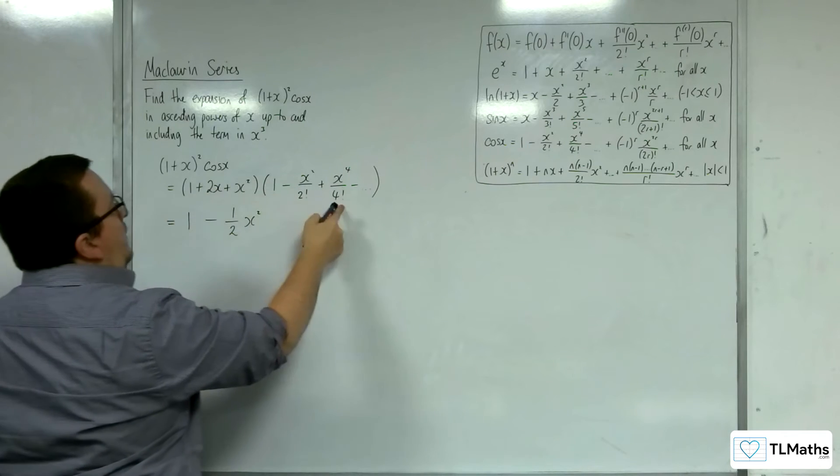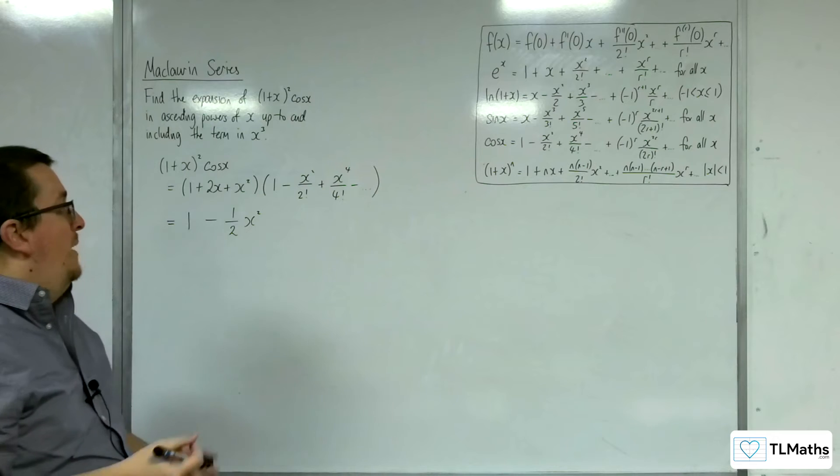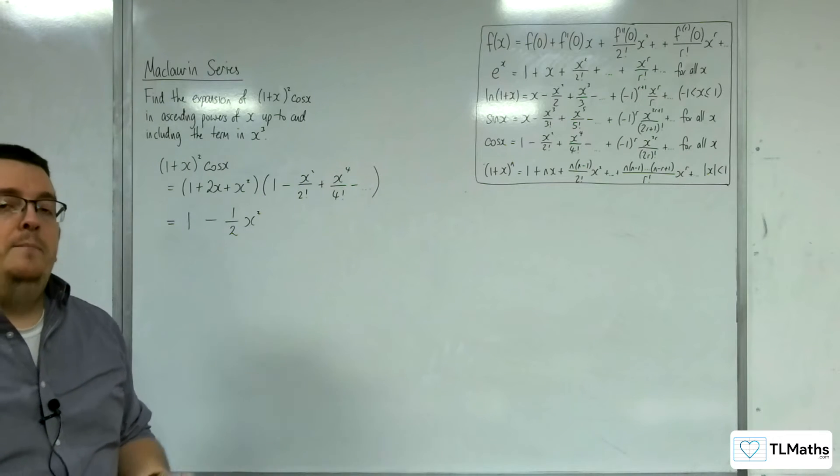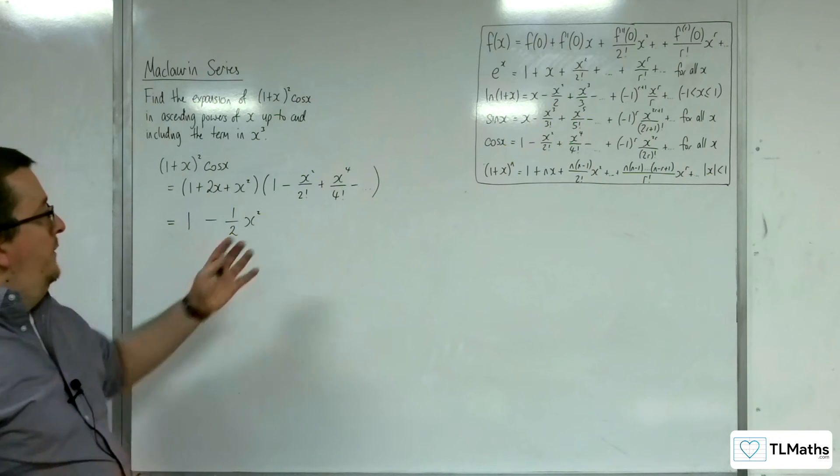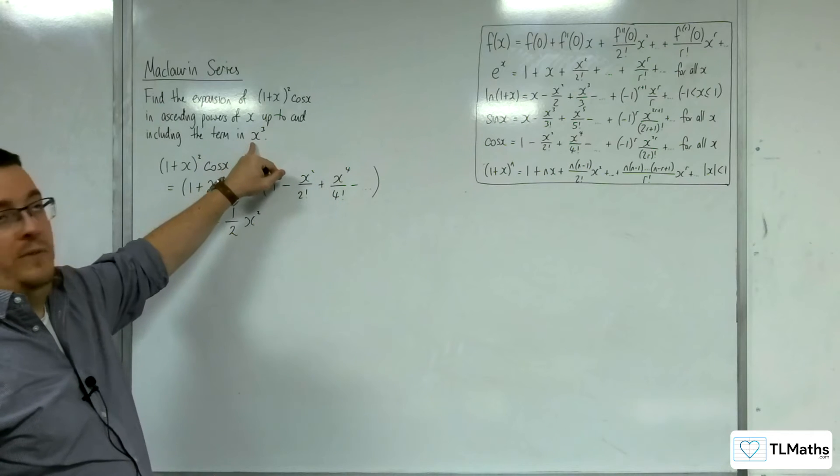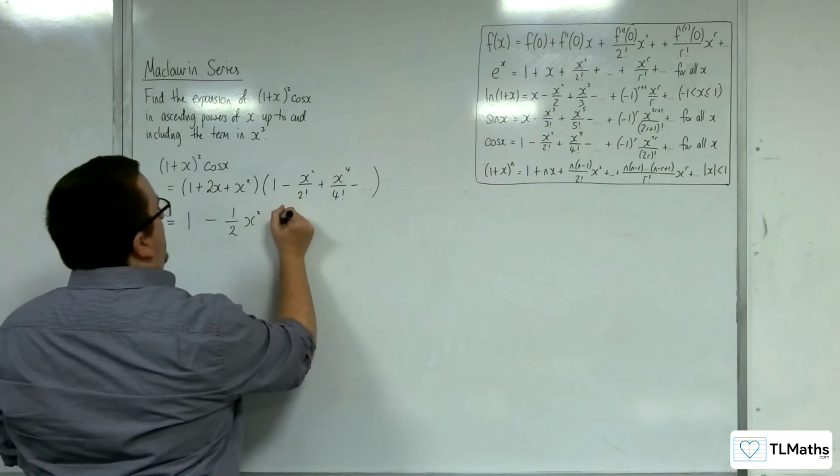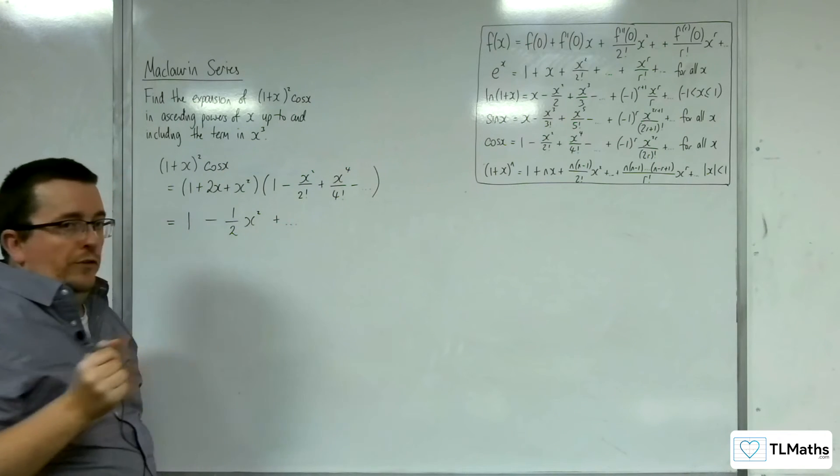And then I'm going to get 1 times x to the 4 over 4 factorial. But I'm not interested in that, because that term is x to the 4, and I only want to go up to x cubed. So I'm not interested in any more terms.